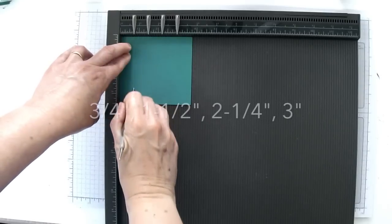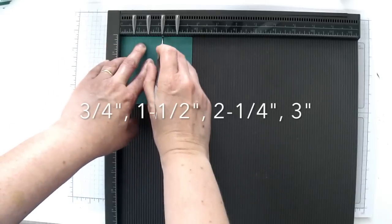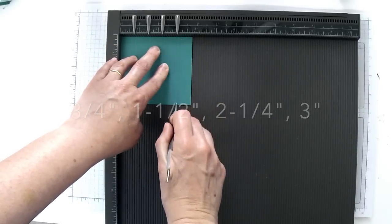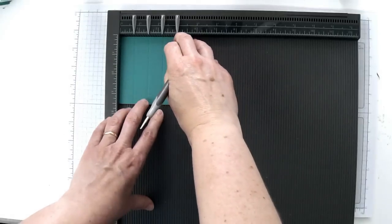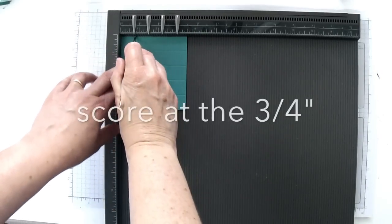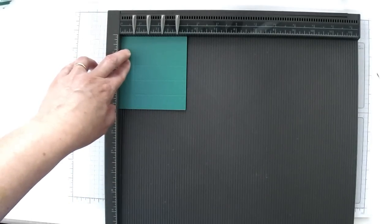Then you're just going to put the three and three-quarter inch side up at the top and you're going to score at the three quarter inch mark, the one and a half inch mark, the two and a quarter inch mark, and the three inch mark. Then you're going to rotate your piece of cardstock 90 degrees and then you're just going to score at the three-quarter inch mark. That's all we're going to do on that side.